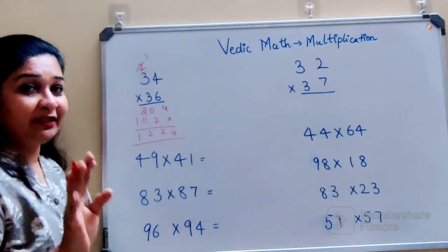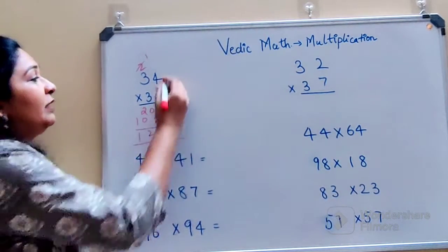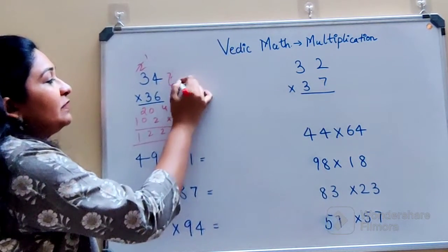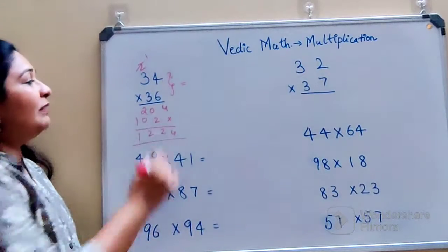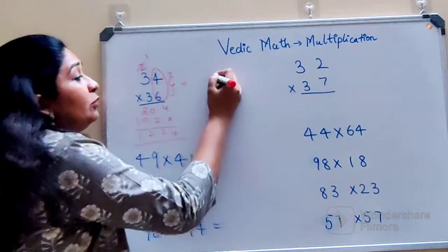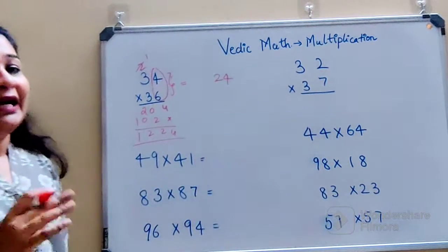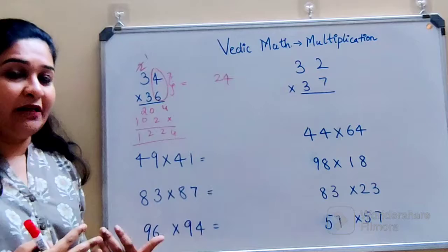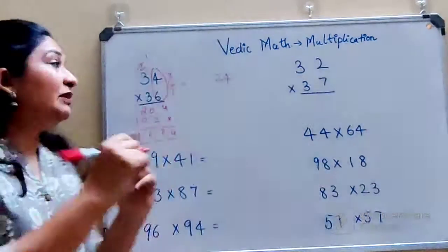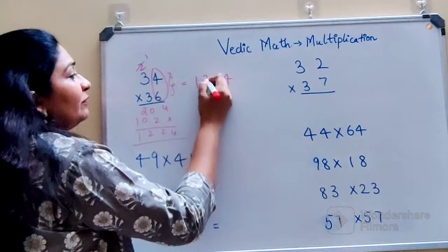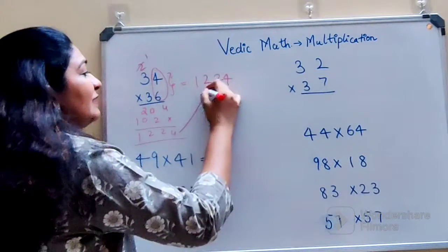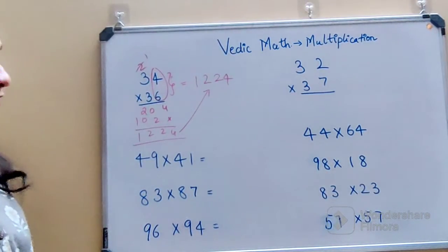But now I am going to show you a trick with which you can actually do this already. All you have to do is just multiply the last two digits, which is 4 into 6. That gets you 24. And for the first part of your answer, all you have to do is just multiply 3 into the next number, that gets you 12. 3 into 4 that gets you 12. And if you see, this answer and this answer is absolutely correct.